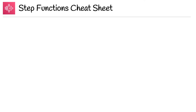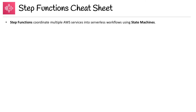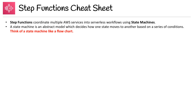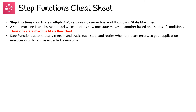We are at the end of the Step Functions overview, so on to the Step Functions cheat sheet. Step Functions coordinate multiple AWS services into service workflows using state machines. A state machine is an abstract model which decides how one state moves to another based on a series of conditions. Think of state machines like a flow chart. Step Functions automatically triggers and tracks each step and retries when there are errors, so your application executes in the order as expected every time.